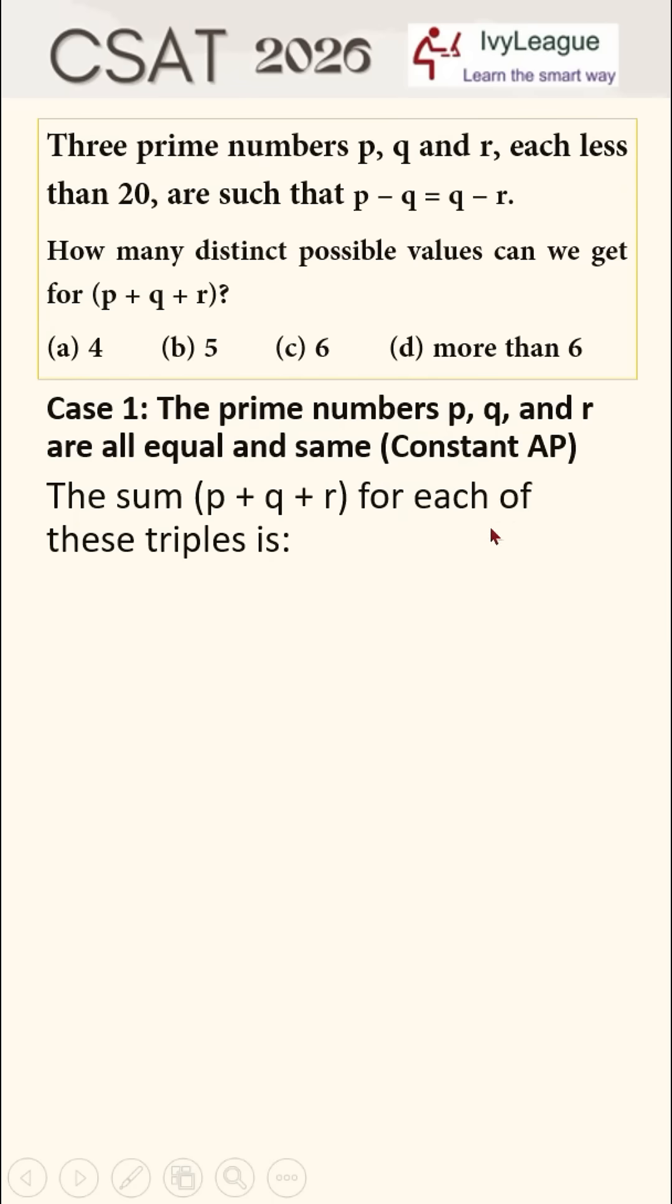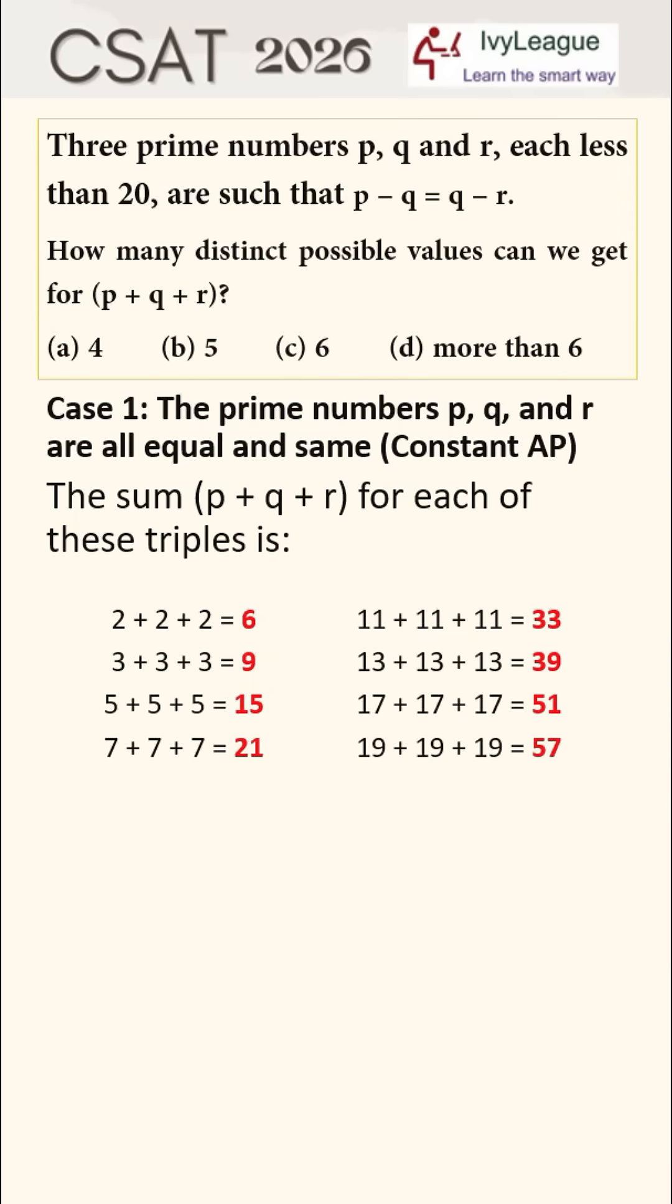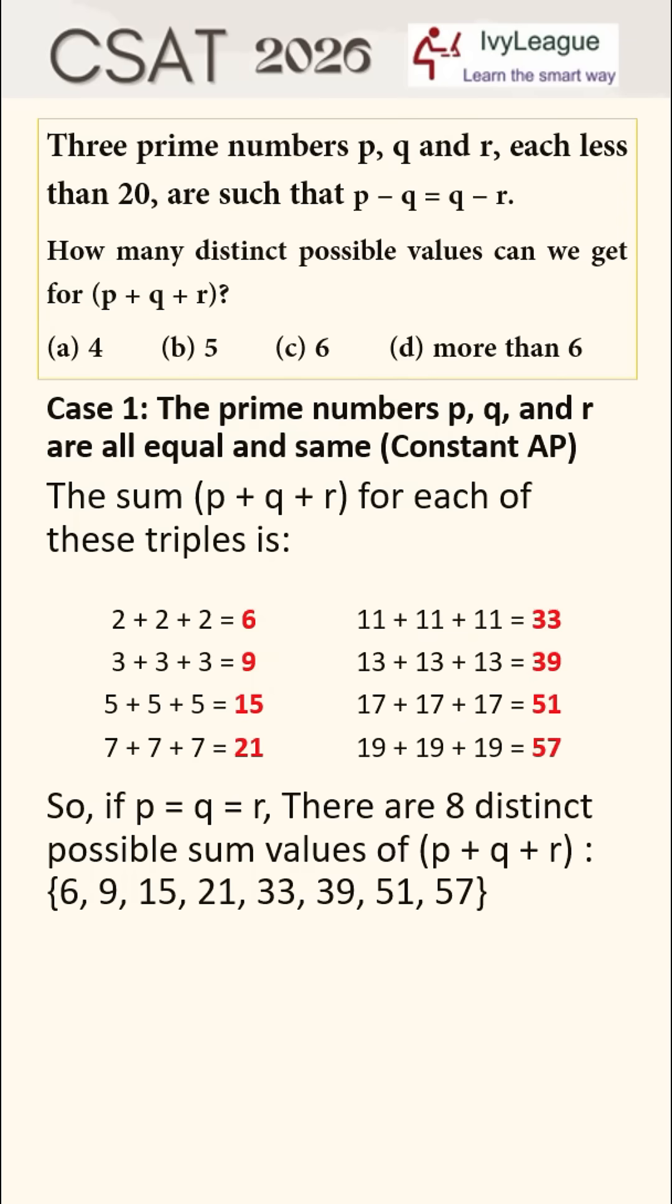So the sum p plus q plus r for each of these triplets is 6, 9, 15, 21, 33, 39, 51, and 57. So if p is equal to q is equal to r, then there are eight distinct possible sum values of p plus q plus r.